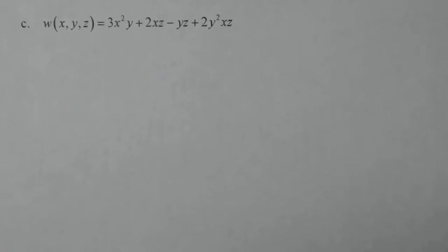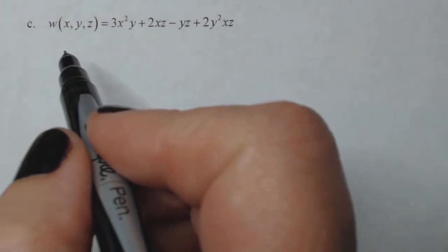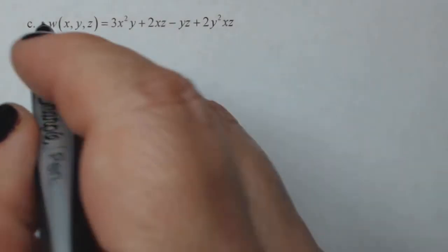All right, here is another example of a partial derivative, multiple partial derivatives. So this one has three variables in it.